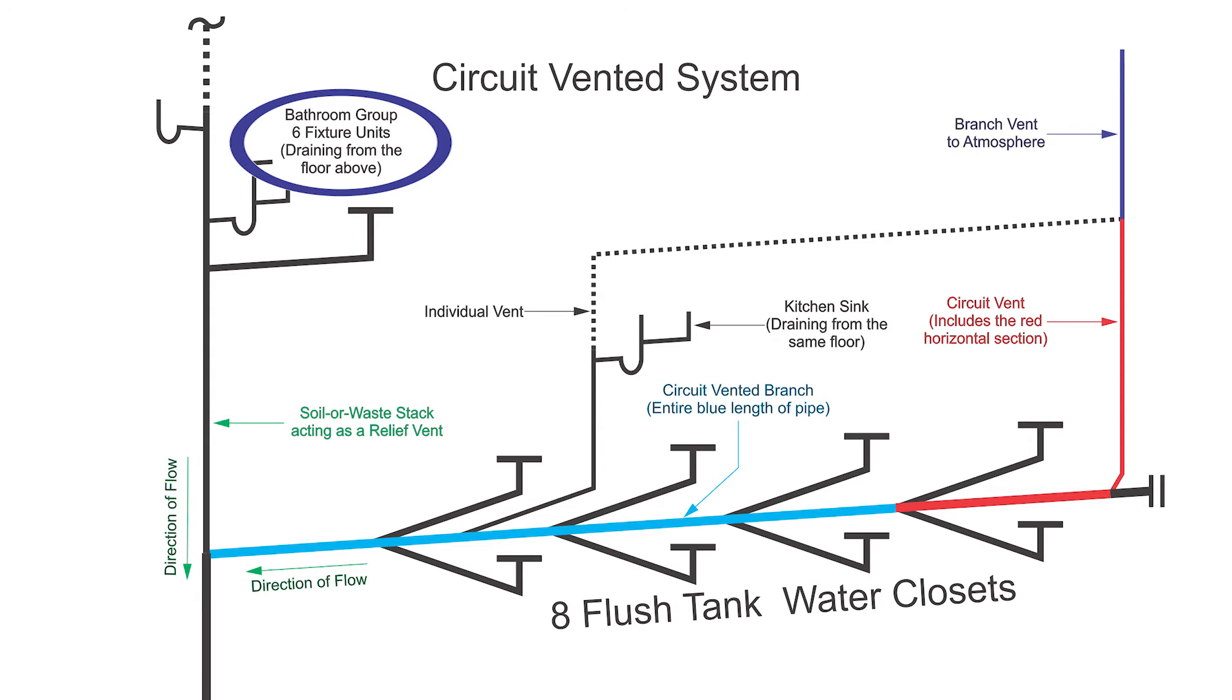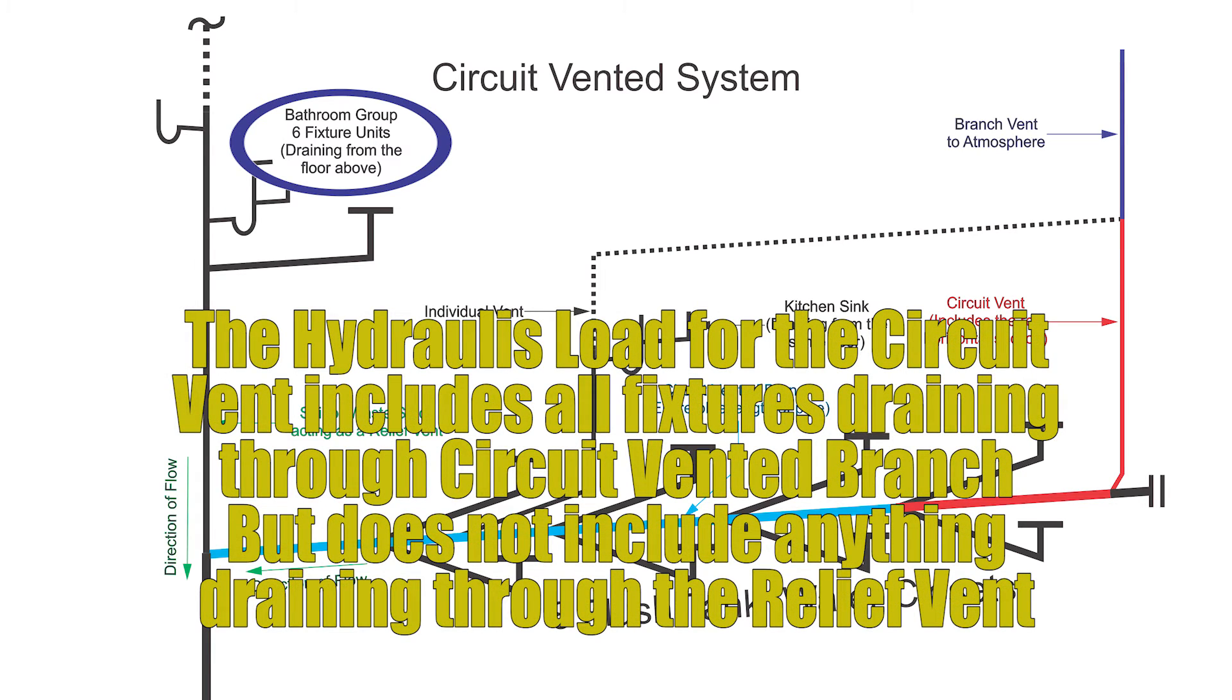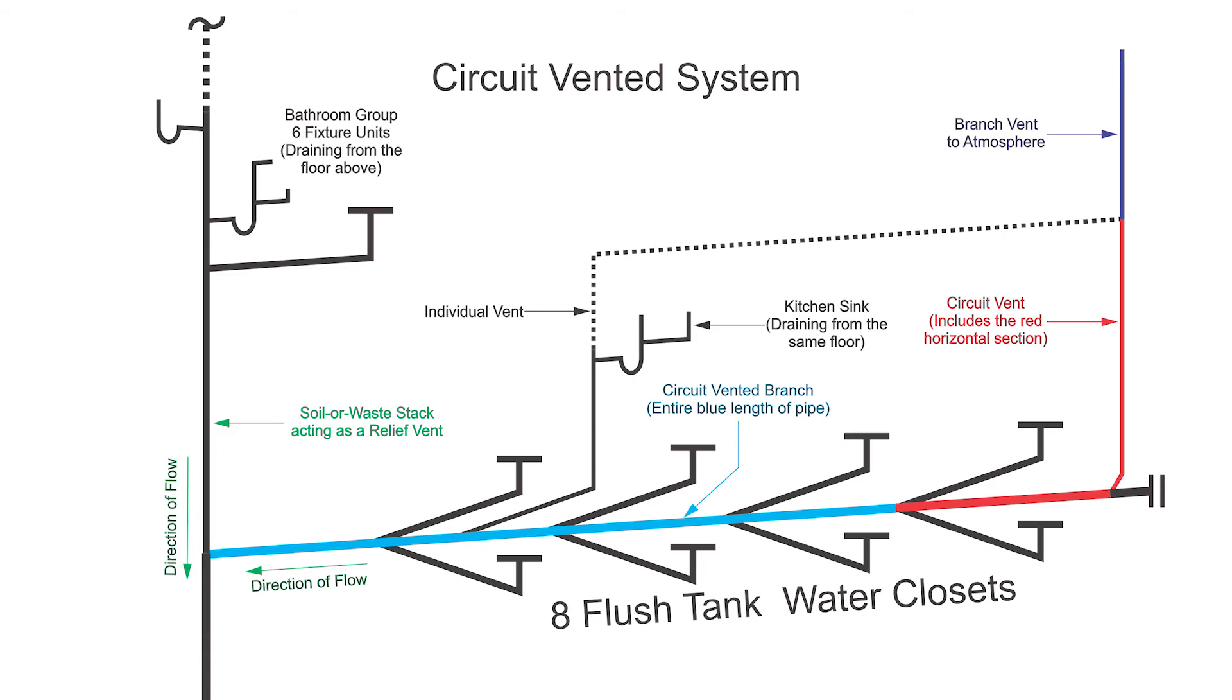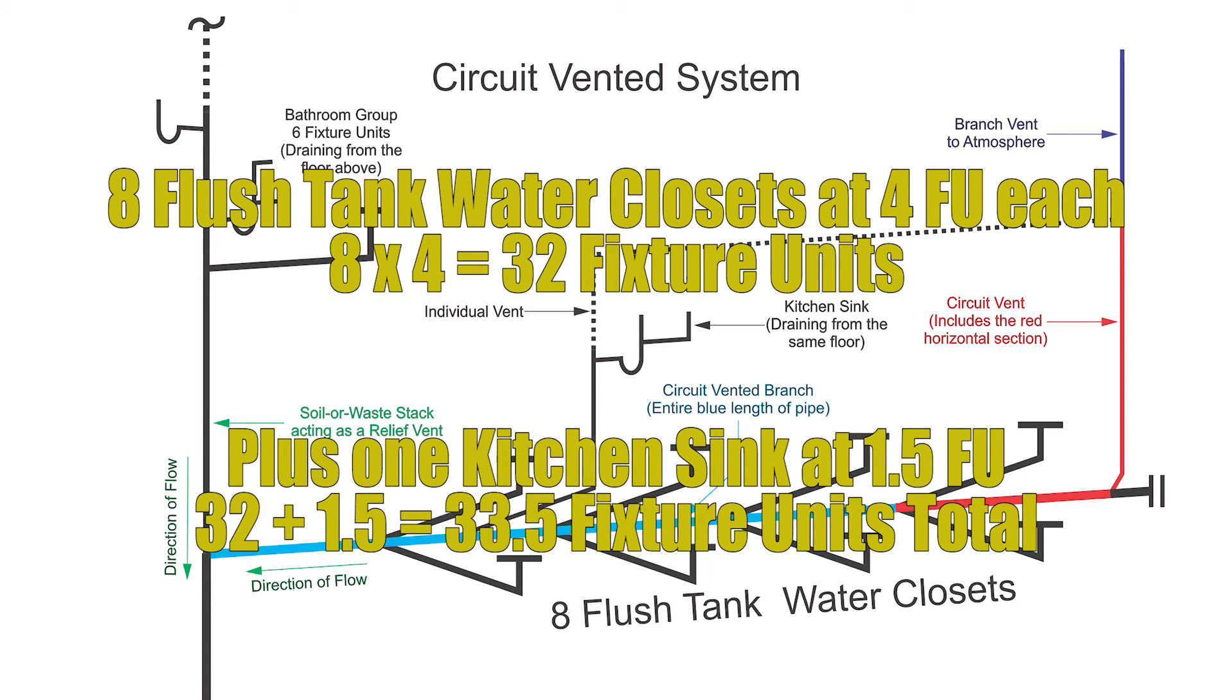So I have a relief vent of six fixture units with that bathroom group. Those six fixture units would not be counted into that number. So the hydraulic load for this circuit vent would be the eight flush tank water closets at four fixture units each, that is 32 fixture units, plus the fixture unit load for a kitchen sink, which is just one and a half. That puts me at 33 and a half fixture units to size my circuit vent.